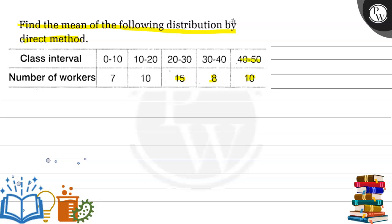For 40 to 50, it's 10. So the key concept to solve this problem is that one should understand what is the direct method of finding mean of the given data. In the direct method, mean is given by: